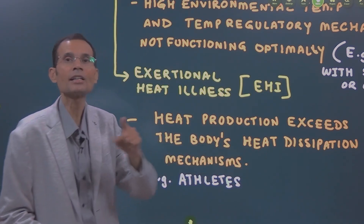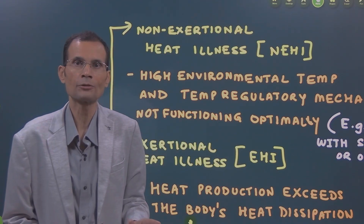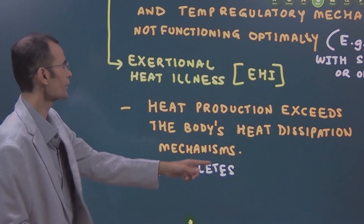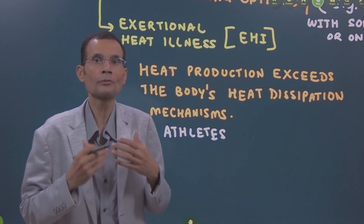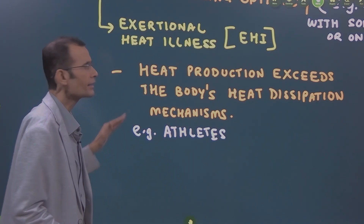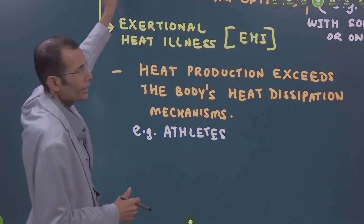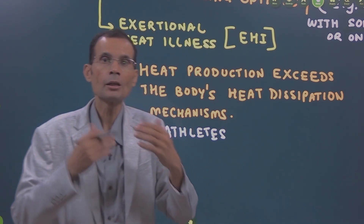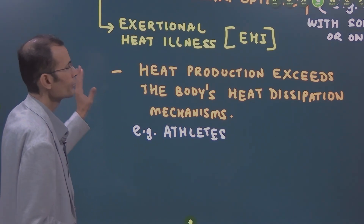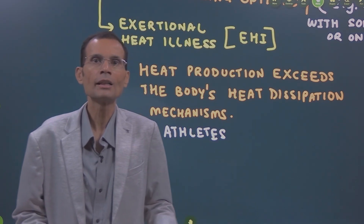The other type is exertional heat illness. In the first type, the person is not exerting themselves — it is just the high environmental temperature causing increased body temperature. But in exertional heat illness, there is heat production because of exertion, and this exertional heat production overwhelms the body's heat dissipating mechanisms. This happens, for example, in athletes where excessive physical exertion produces so much heat in the body that the heat dissipation mechanism is simply unable to cope with it.